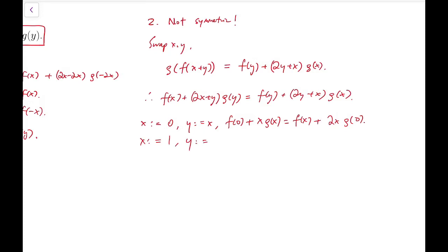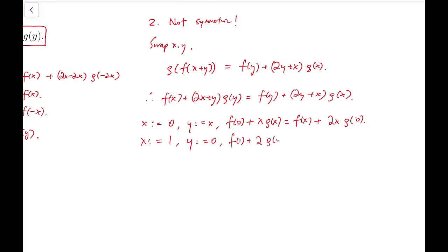The next one is that x becomes 1, while y becomes 0. So f(1) + 2g(0) = f(0) + (0+1)g(1), which gives f(1) + 2g(0) = f(0) + g(1).